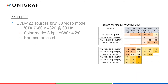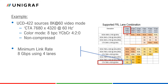It lists the minimum link rate needed for each video mode and color mode combination. In our example, we will be using UCD422 to source 8K non-compressed video with 60Hz frame rate. We will use YCbCr color mode with 8-bit depth per color component. From the table in the UCD422 user manual, we can see that the minimum link rate for this combination is 8 gigabits per second, using all four lanes.